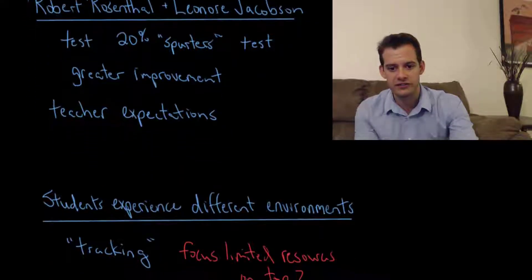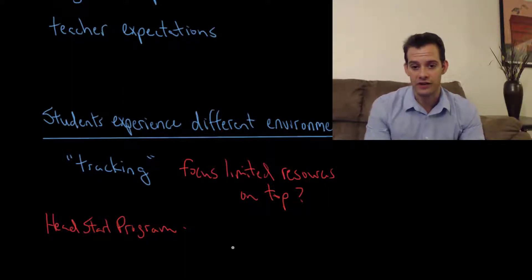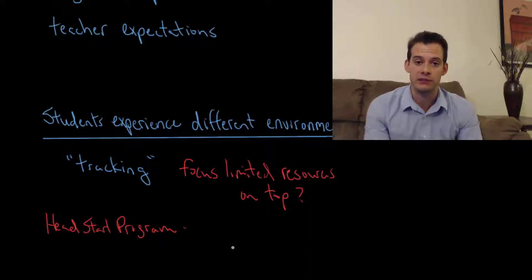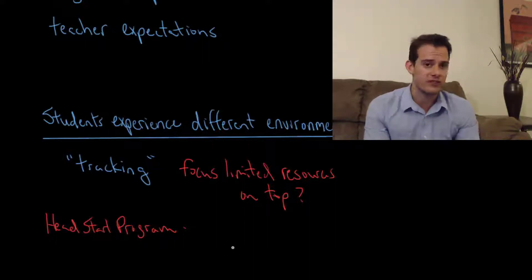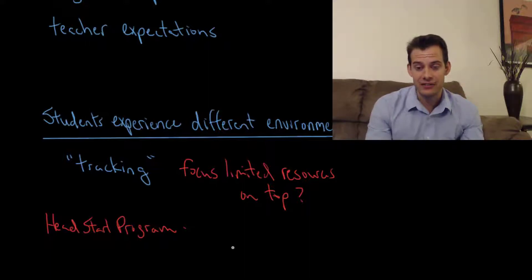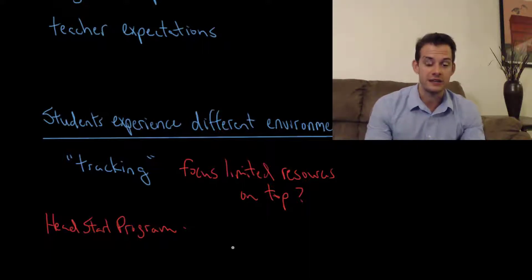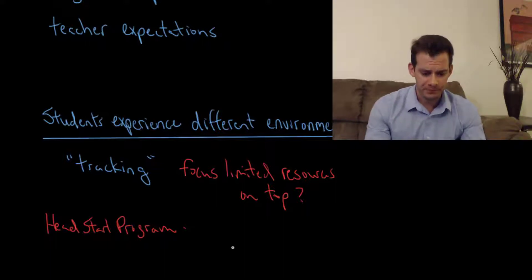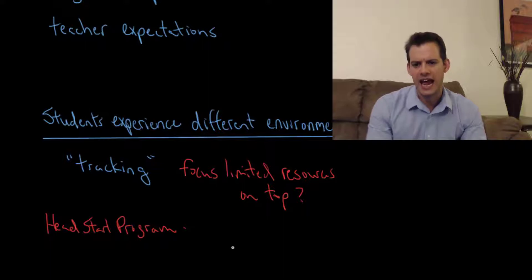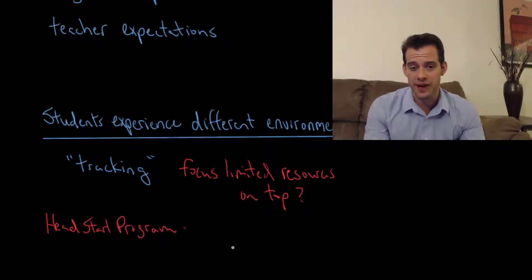We can also think about more extreme environmental differences through the practice of tracking, where students are placed into groups based on early performance — top students in higher tracks, struggling students in lower tracks. Limited resources may be focused on top-performing groups, while lower tracks are seen as a lost cause. This connects to a controversy in The Bell Curve by Richard Herrnstein and Charles Murray, which suggested focusing resources on high-IQ individuals and implied investing in lower-performing groups is unlikely to yield improvement.